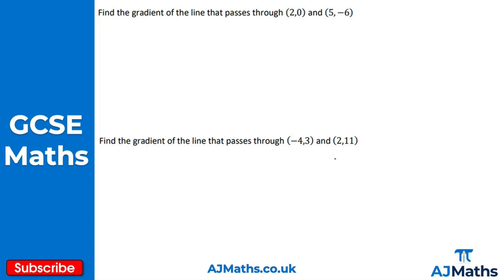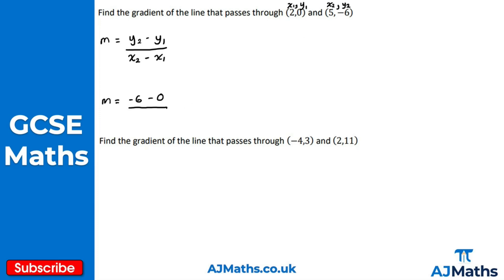Hopefully you're okay with these two practice questions. Let's take a look at what you should have got. Again we're just using the same formula: y2 minus y1 all over x2 minus x1. I'll pick one point as x1, y1 and the other as x2, y2. Substituting in: m is equal to y2 which is minus 6, minus y1 which is 0, all over x2 which is 5 minus 2.